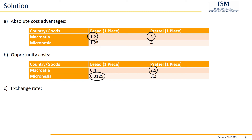We take something like the average of the corresponding opportunity costs — here we have 2.5 and 3.2, so the average is somewhere around 2.8 to 3. With this in mind, we observe the three possible exchange rates and see that 3 to 1 is closest to the opportunity costs for pretzels, around 2.8 to 3. So the exchange rate 3 to 1 is the one which will most likely occur.